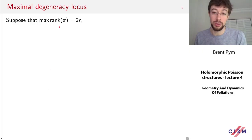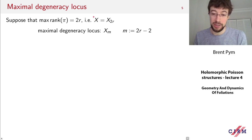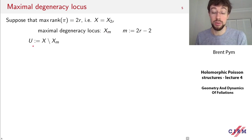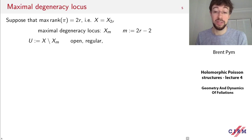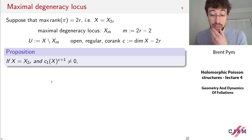More generally, suppose we have a Poisson structure whose maximum rank throughout X is 2r. The space X equals X_{2r}, all symplectic leaves have dimension at most 2r, and the co-rank is C equals dim(X) minus 2r. The maximal degeneracy locus X_M with M = 2r minus 2 is where the rank drops below 2r. The complement U equals X minus X_M is an open set carrying a regular Poisson structure of rank 2r everywhere.